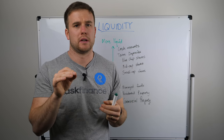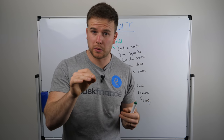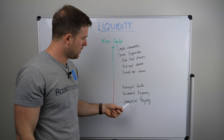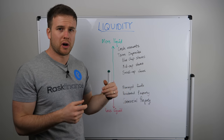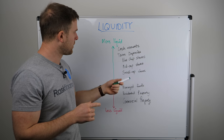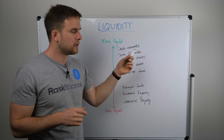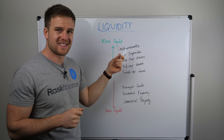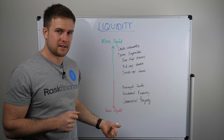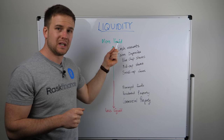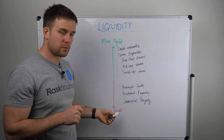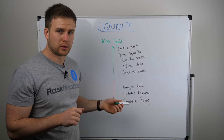I find it's best to explain liquidity with an example. So here we have a list of different things that you might invest in, or things that you might put your money into. We have the more liquid investments or assets at the top here, and we have less liquid assets at the bottom. These ones would be easier to get in and out of quickly, and these ones would be more difficult or time consuming.